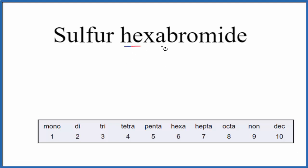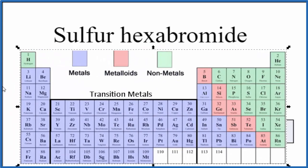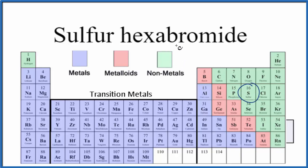To write the formula for sulfur hexabromide, we first need to figure out what type of compound we have. So we look at the periodic table, and we see sulfur, that's a non-metal, and then bromine, right here, also a non-metal.